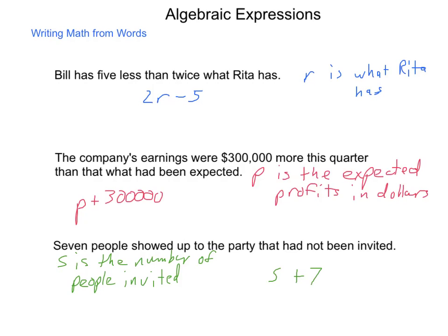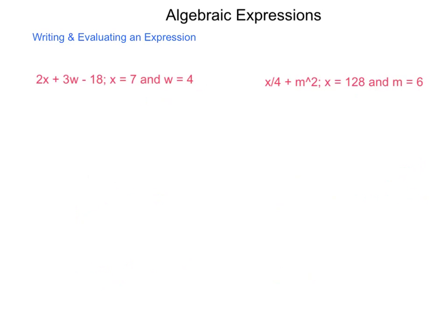Now we can take these algebraic expressions and begin to evaluate. If you have an algebraic expression 2X plus 3W minus 18, and we're given values of X is 7 and W is 4, it becomes a simple matter of substituting in values and simplifying in order to find the worth. Through this simplification, we're using the order of operations.